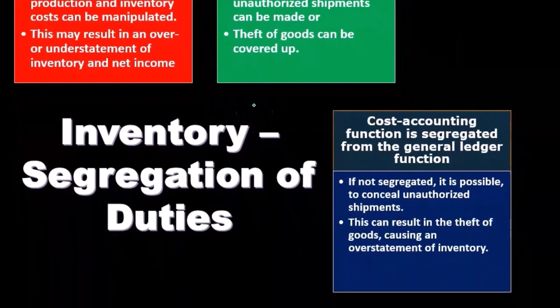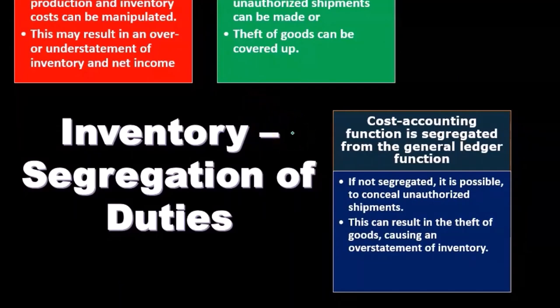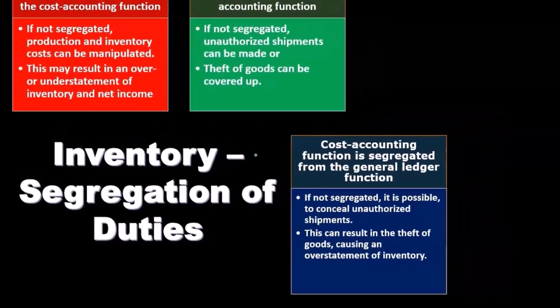The cost accounting function is segregated from the general ledger function. If not segregated, it is possible for one person in charge of both functions to conceal unauthorized shipments.